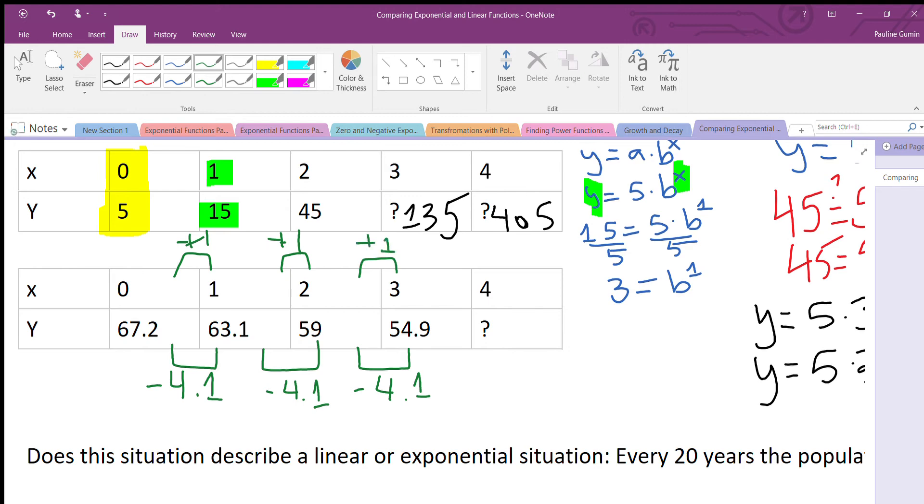From 59 to 54.9, same thing, minus 4.1. Perfect. And plus 1. So let's fill this value in. 54.9 minus 4.1 is 50.8. And of course, this is still plus 1. This was a linear one.